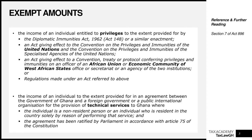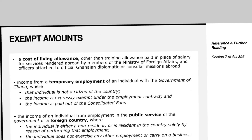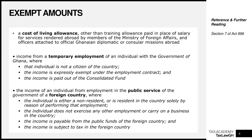The next is any cost of living allowance, other than a training allowance, which is paid in place of a salary for services rendered abroad by members of Ghana's Ministry of Foreign Affairs and officers attached to official Ghanaian diplomatic or consular missions abroad. Any cost of living allowance paid to people rendering service abroad for Ghana under the Ministry of Foreign Affairs or diplomatic and consular missions is exempt. Take note: it is the cost of living allowance that is exempt, excluding the training allowance.